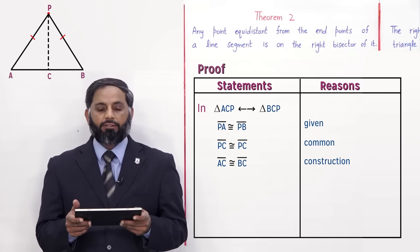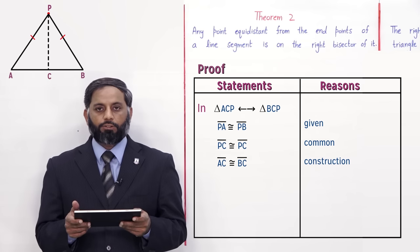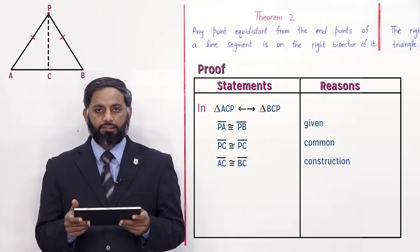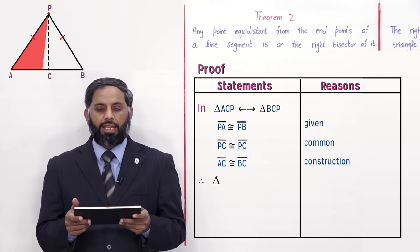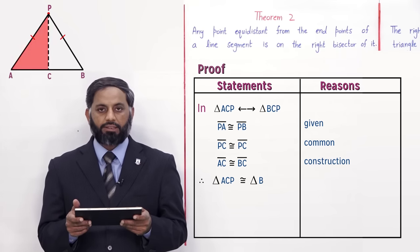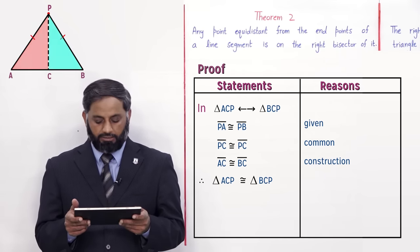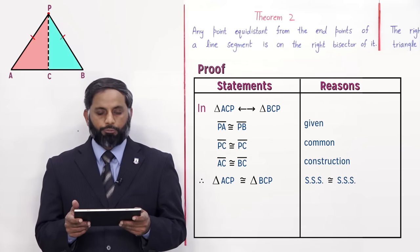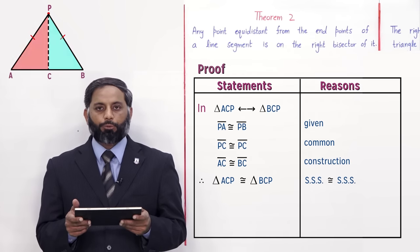Now we have proved that all three sides of one triangle are equal to the corresponding three sides of the other triangle. Therefore the triangles are congruent: triangle ACP is congruent to triangle BCP by SSS congruence.